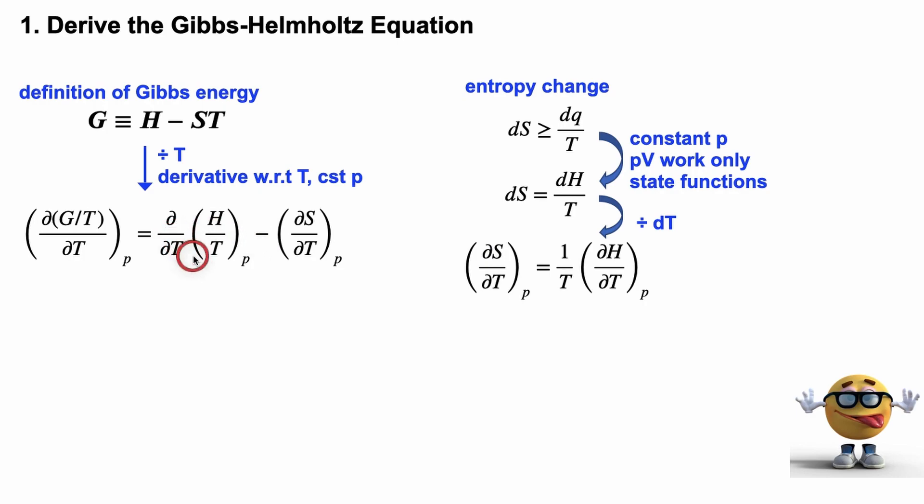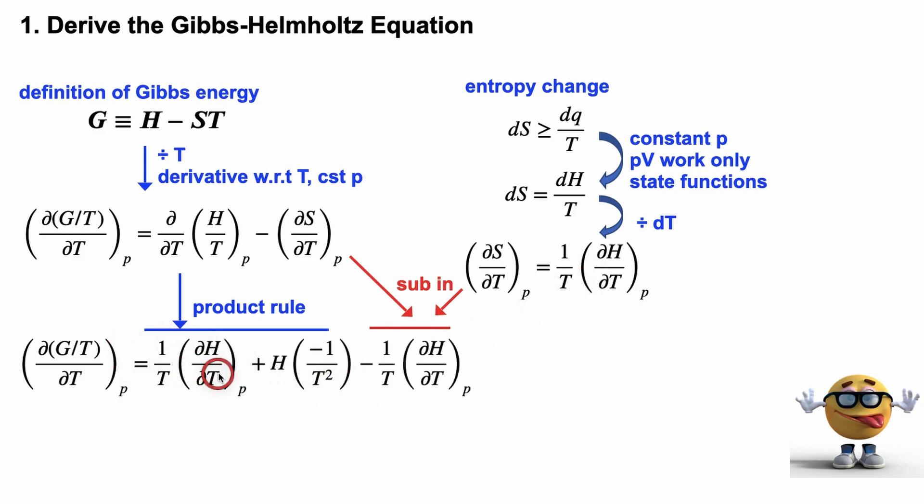But at the same time, we're going to do the product rule with this term. And I know there's a divided by here, but we can do the product rule assuming this is like H times 1 over T. And I'll explain that shortly once I show you how it's done. So we're going to do the product rule with this term, and we're going to sub in what this term is, which is this side right here. And if we do that, we're left with this equation right here.